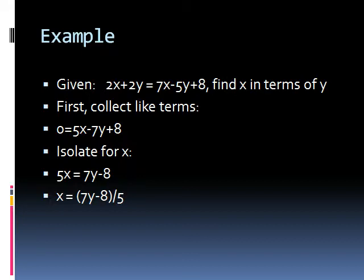First we collect like terms in which we put all the x's together and the y's together so that we can simplify this equation. So if we actually put all of these on one side, we would have 0 equals to 5x minus 7y plus 8.